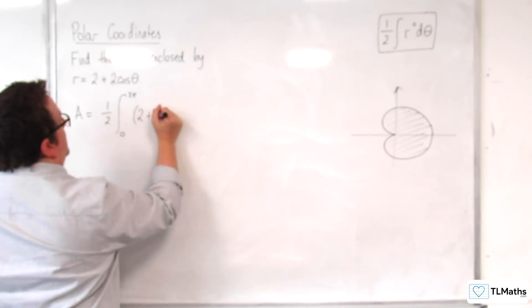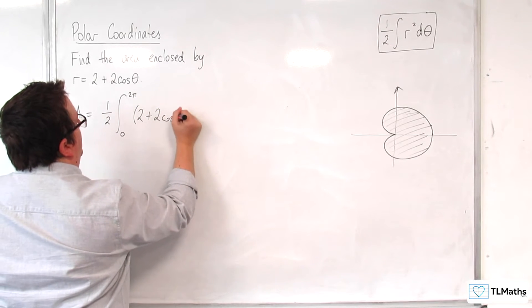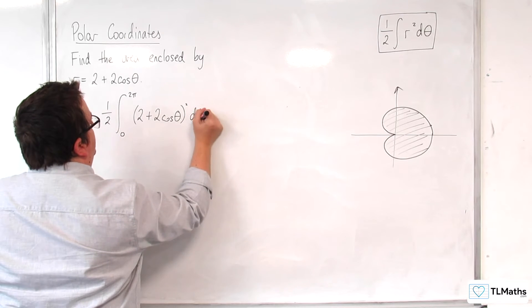Probably easy just to work with 0 to 2 pi of r squared. So 2 plus 2 cosine theta all squared d theta.